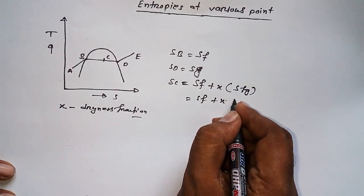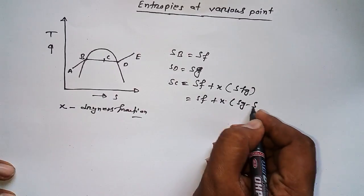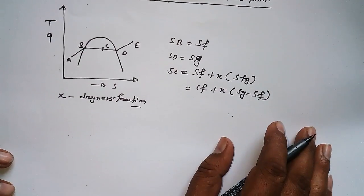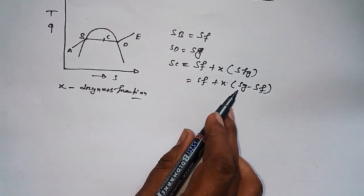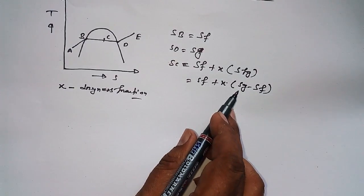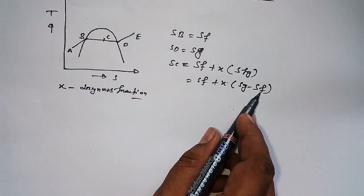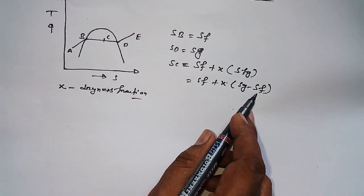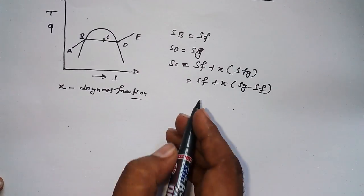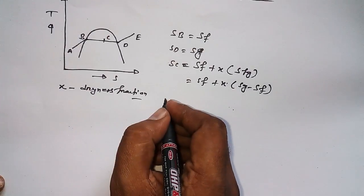Which equals S_f plus x times (S_g minus S_f). Again, the same condition: entropy at vapor condition of the same matter is always greater than entropy at liquid condition of the same matter. Now let's move to the next one.